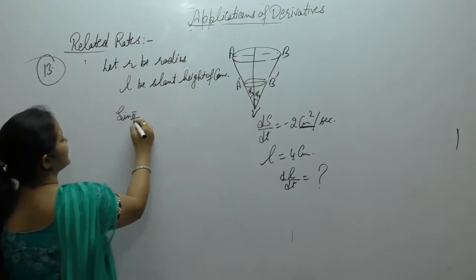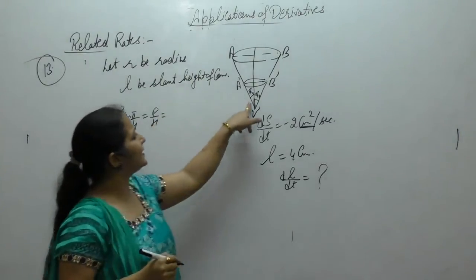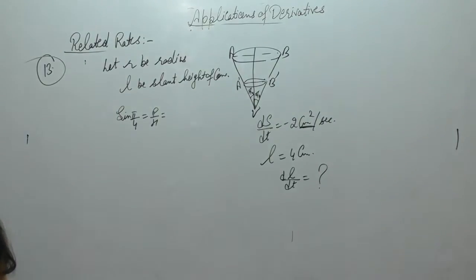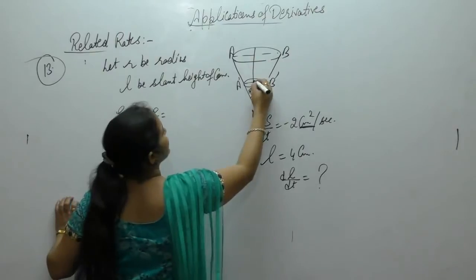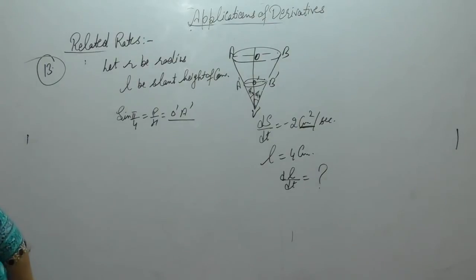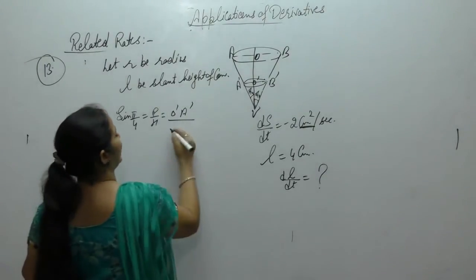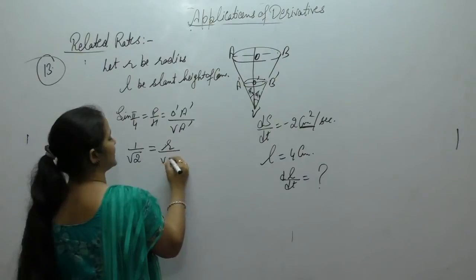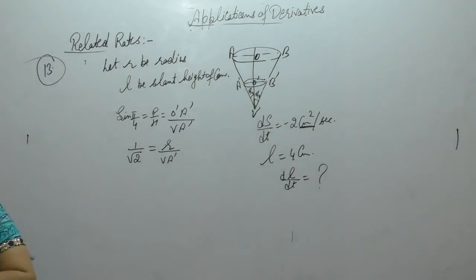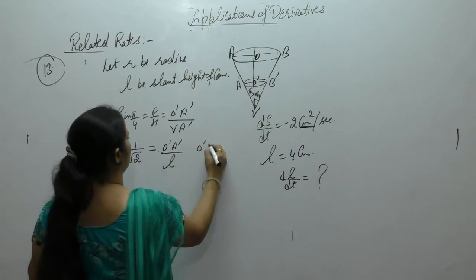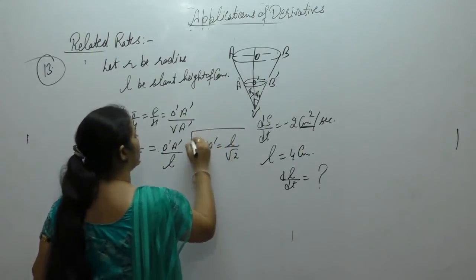If we find sine of the angle, sine is perpendicular upon hypotenuse. The angle's opposite side is perpendicular. So sine π/4 = O'A' upon hypotenuse VA'. Sine π/4 is 1/√2, and O'A' is the radius. So VA' is slant height l, giving us O'A' = l/√2.